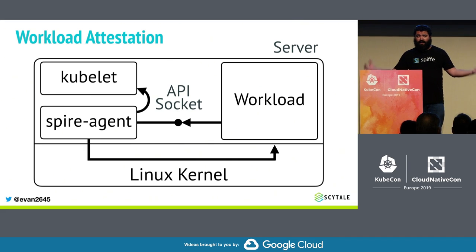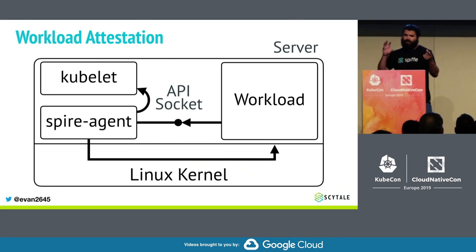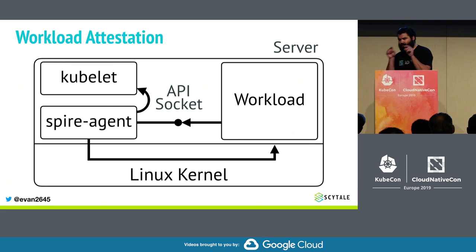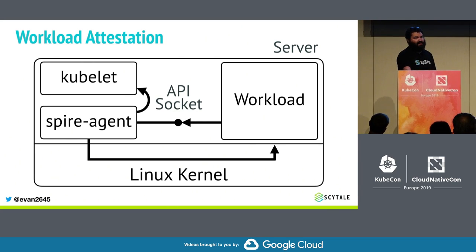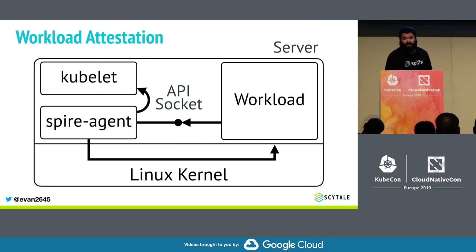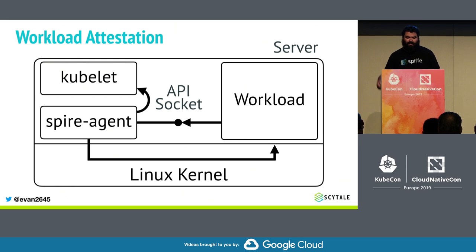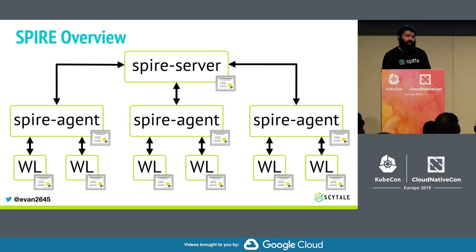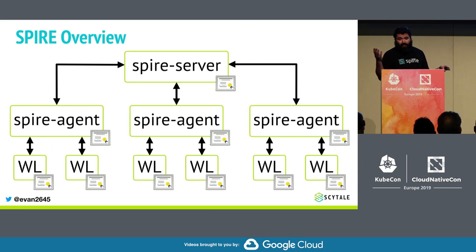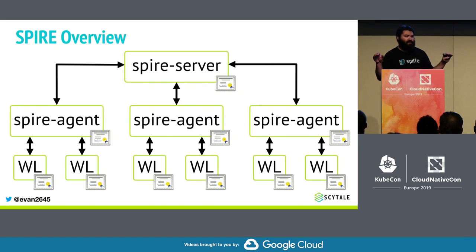The agent takes all this information from the workload attesters and forms those selectors. That's how we describe the particular workload. Now we know, number one, where this workload is running — because we know it's talking to this particular agent in this particular cluster — and number two, what identity to issue it, because the agent has been able to figure out all this information about the caller. Finally, our workloads are all issued SPIFFE IDs. Once received, they can be used directly for TLS, at least the X.509 SVIDs. This forms a really valuable building block for authorization systems like OPA, because it gives a stable concept of identity that is well-defined and consistent across platforms.